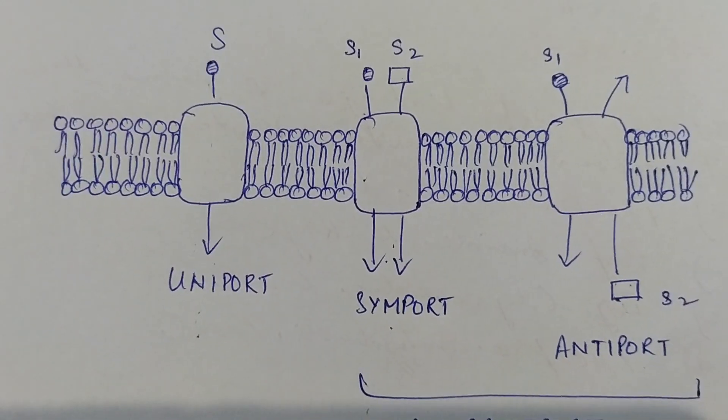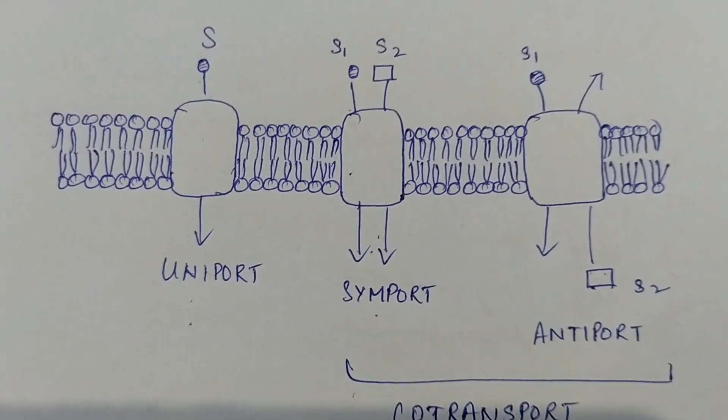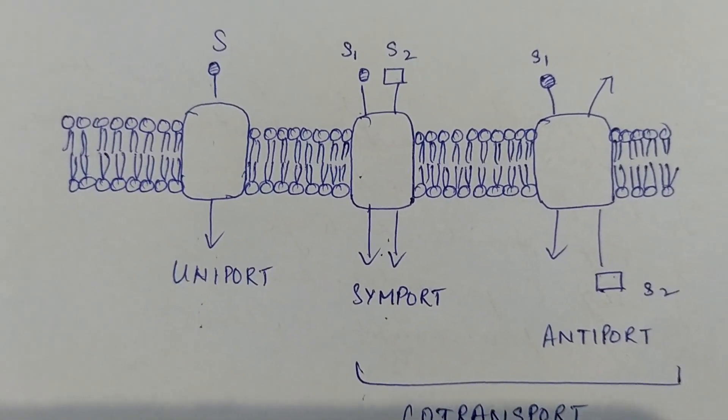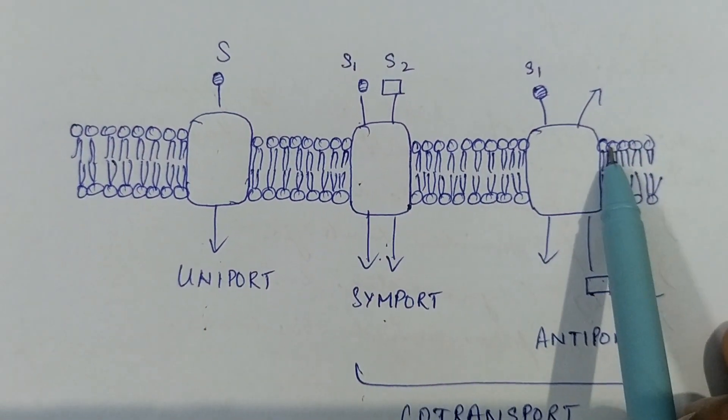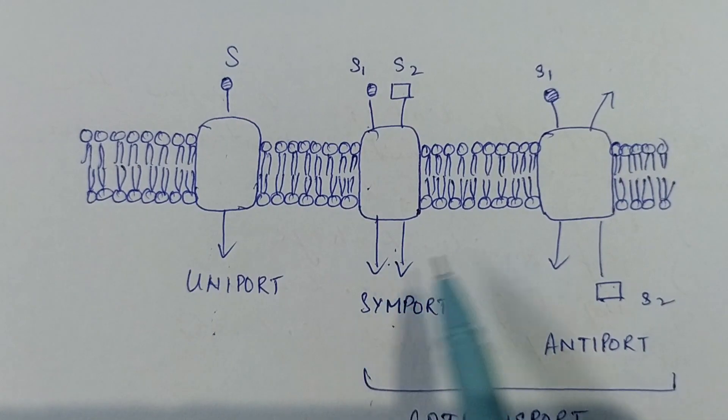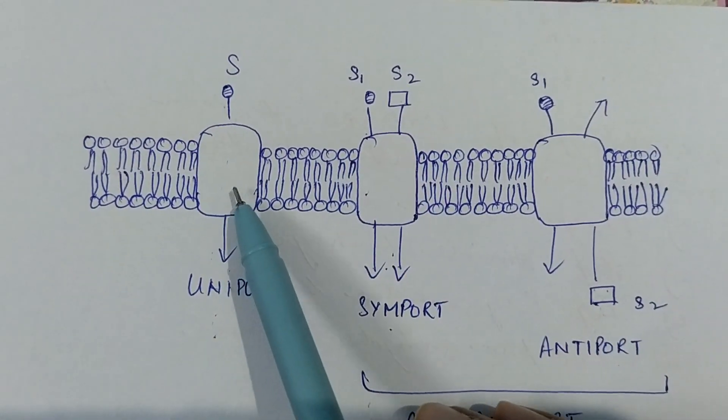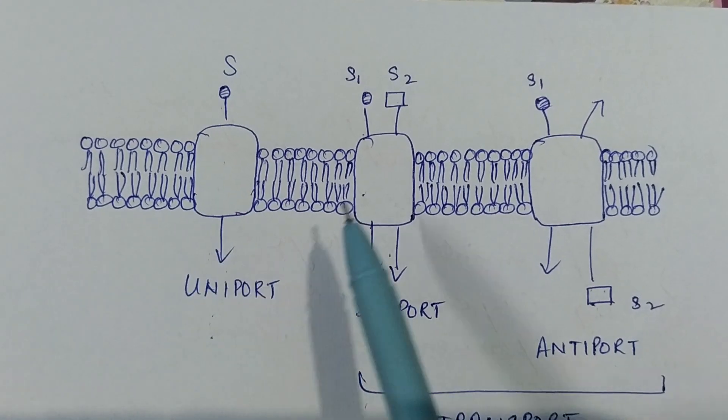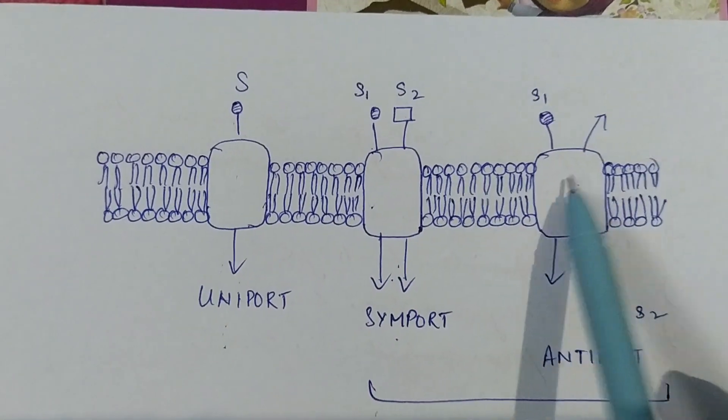So secondary active transport is a co-transport and it may be symport or antiport. And all of these are basically carrier proteins. So carrier proteins cause uniport - they may be uniporters, symporters, or antiporters.